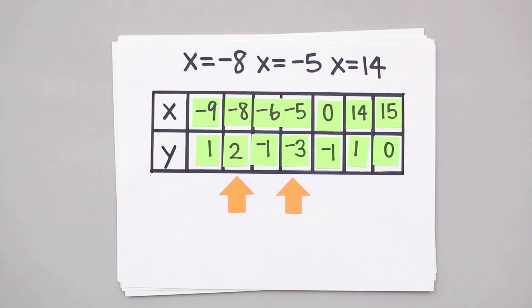Likewise, the point negative 5, negative 3 is a minimum because the function is going up on either side of negative 5, and the point 14, 1 is another maximum since the function is going down from 1 to negative 1 on the left and from 1 to 0 on the right hand side of x equals 14.